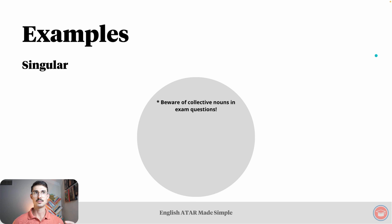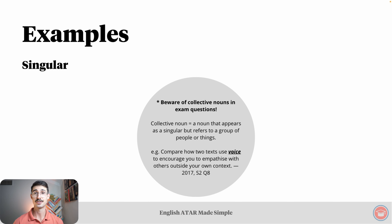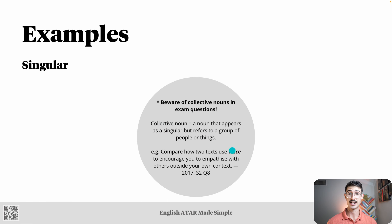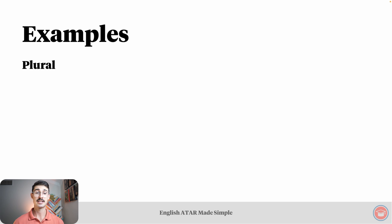The word 'often' is there because of collective nouns — beware of these in exam questions. Collective nouns are nouns that appear as singular but refer to a group of people or things. For example: 'Compare how two texts use voice to encourage you to empathise with others outside your own context.' You could discuss a different type of voice for each text. In this example, 'voice' appears singular — not 'voices' — but refers to a group of voices, one from each text. These questions don't come up often, but be mindful that they do exist.